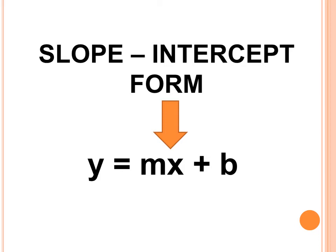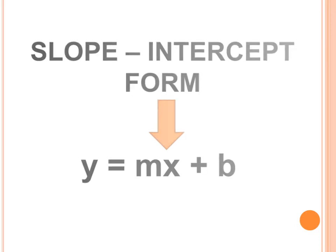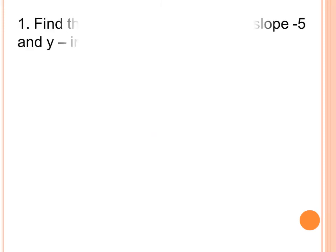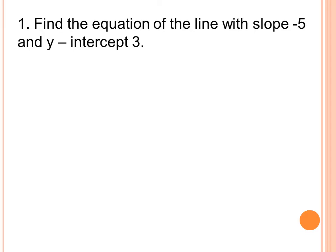For example number one: find the equation of the line with slope negative 5 and y-intercept 3. So the slope is negative 5, denoted by small m, and the y-intercept is 3, denoted by small b.